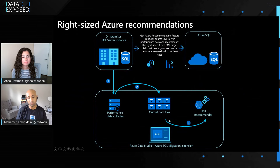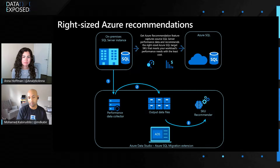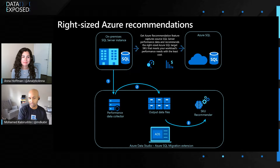Just to dive into what the SKU recommendation or right-sized Azure recommendations does: it basically goes and collects your performance data from your on-premises SQL Server, stores that performance data on your local machine where you're running Azure Data Studio, and then a SKU recommender analyzes that data to give you the right recommendations. This recommendation gives you the best SKU that will meet your performance needs, but also with the least minimal cost. When multiple SKUs can meet your performance, we choose the least expensive option.